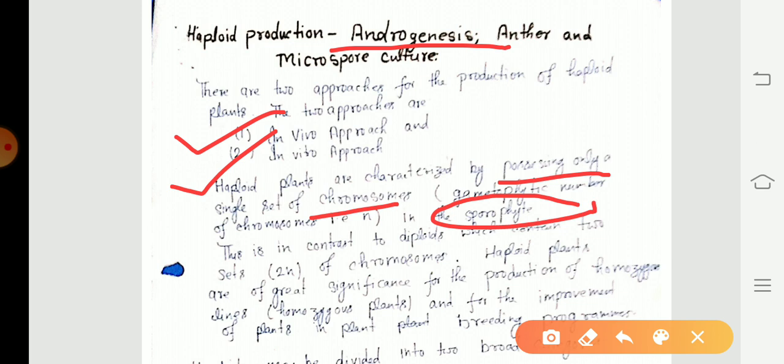Diploid plants are those having two sets of chromosomes in the sporophyte stage. In the plant, there are two stages in the life cycle: gametophyte stage and sporophyte stage. The main difference between haploid and diploid plants is that haploid plants have a single set of chromosomes in the sporophyte stage while diploid plants have two sets of chromosomes in the sporophyte stage of the plant.